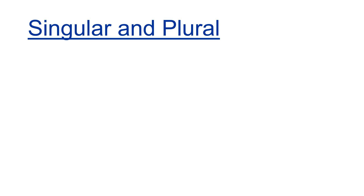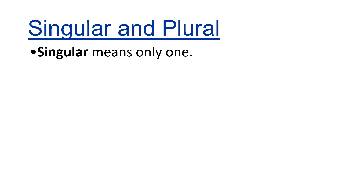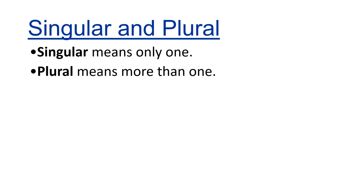Singular and plural. Singular means only one. Example: an apple, a car, a ball. Whereas plural means more than one — balls, mangoes, cars, etc.